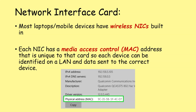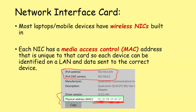Here we're looking at some of the properties of a device and we can see the physical address — the MAC address of that device. The MAC address is how we identify computers on a local area network, and this is different from the IP address, which is how you identify devices on a wide area network. These MAC addresses are hardwired into the network interface card, which is usually built into modern computers.